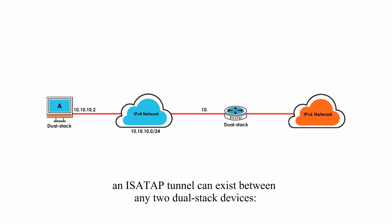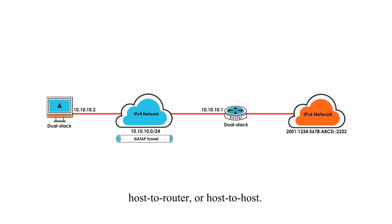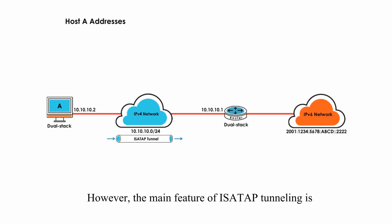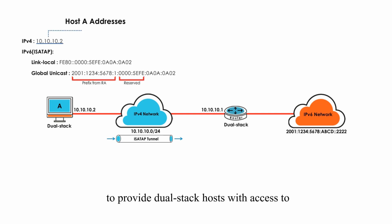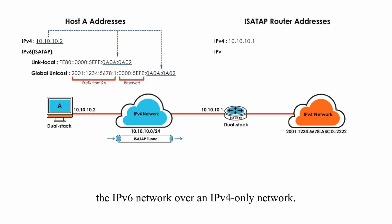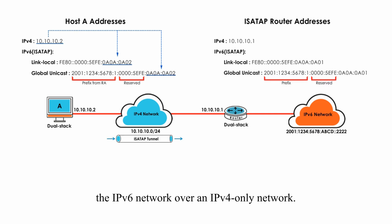Like other tunneling methods, an ISATAP tunnel can exist between any two dual-stack devices — host-to-router or host-to-host. However, the main feature of ISATAP tunneling is to provide dual-stack hosts with access to the IPv6 network over an IPv4-only network.